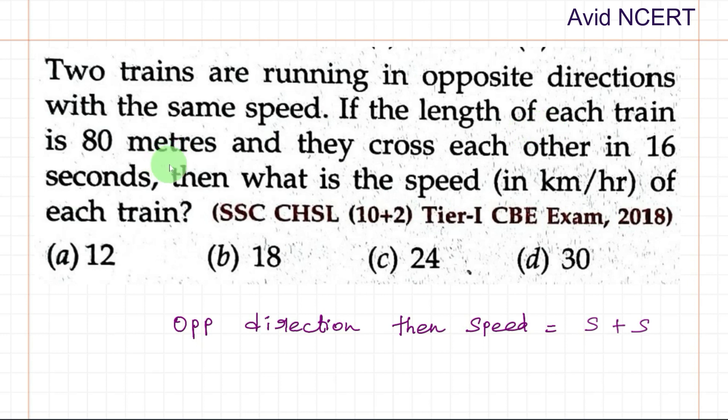Next, the length of each train is 80 meters. So length equals distance equals 80 meters. They cross each other in 16 seconds, so the time taken is 16 seconds.